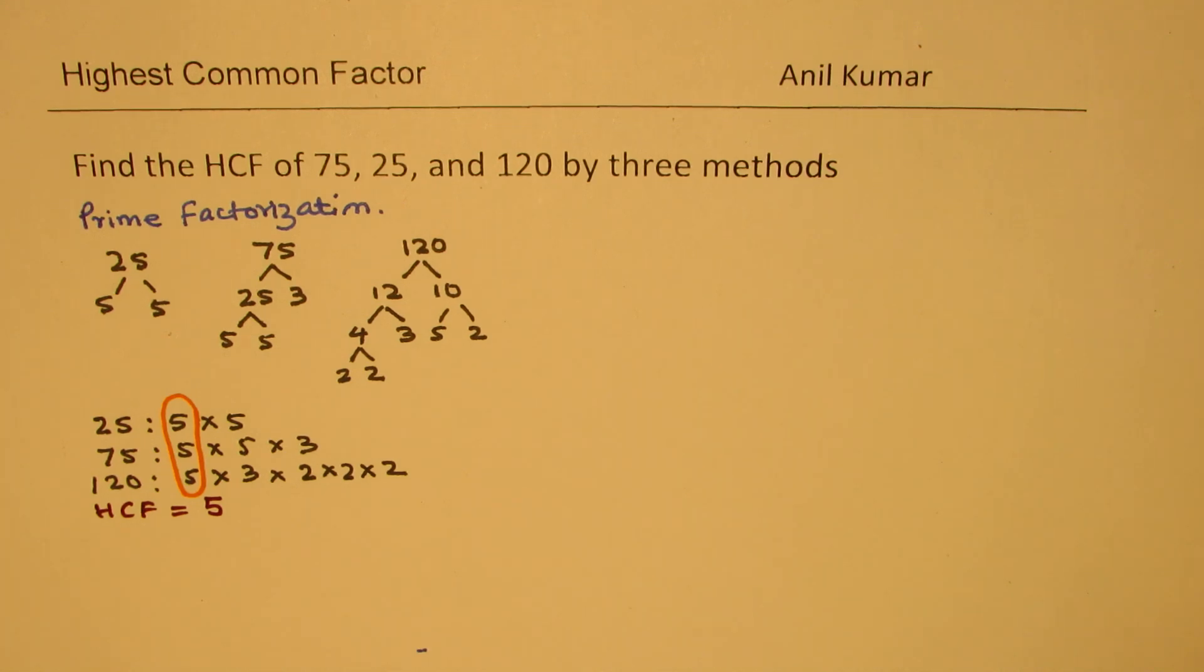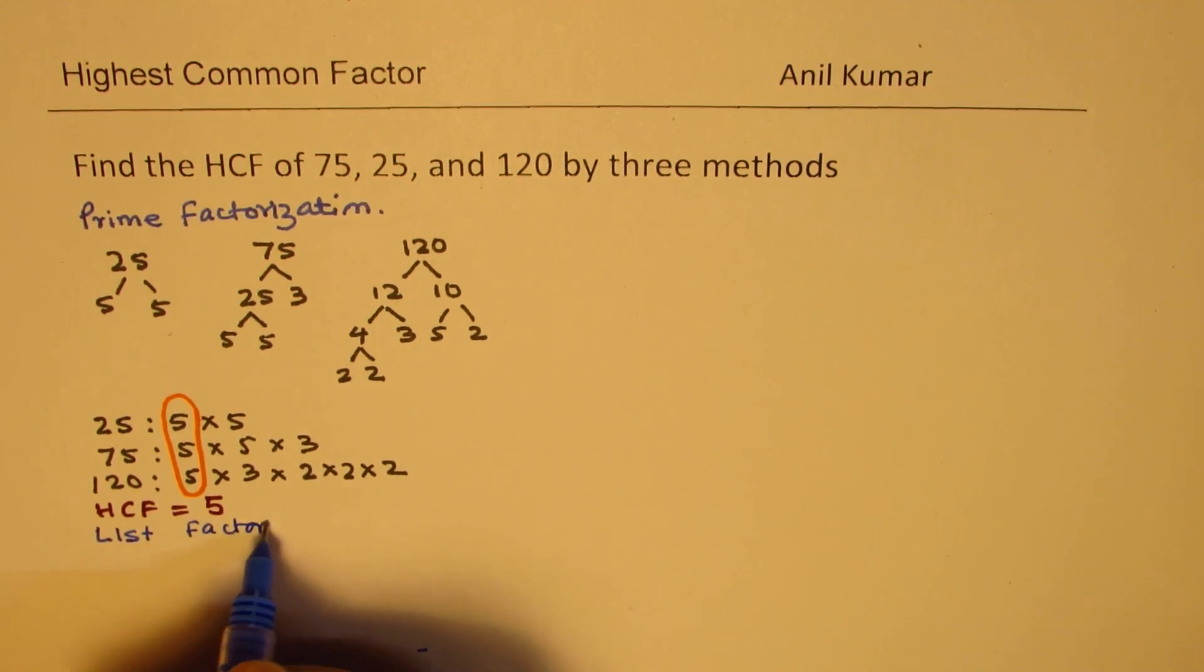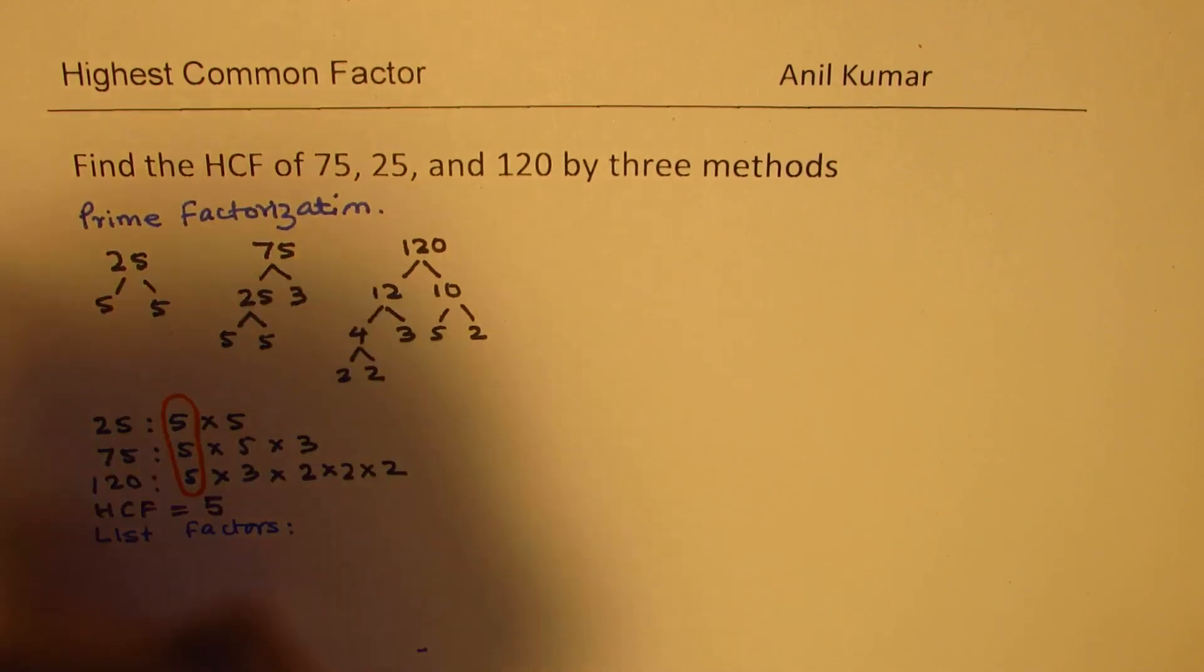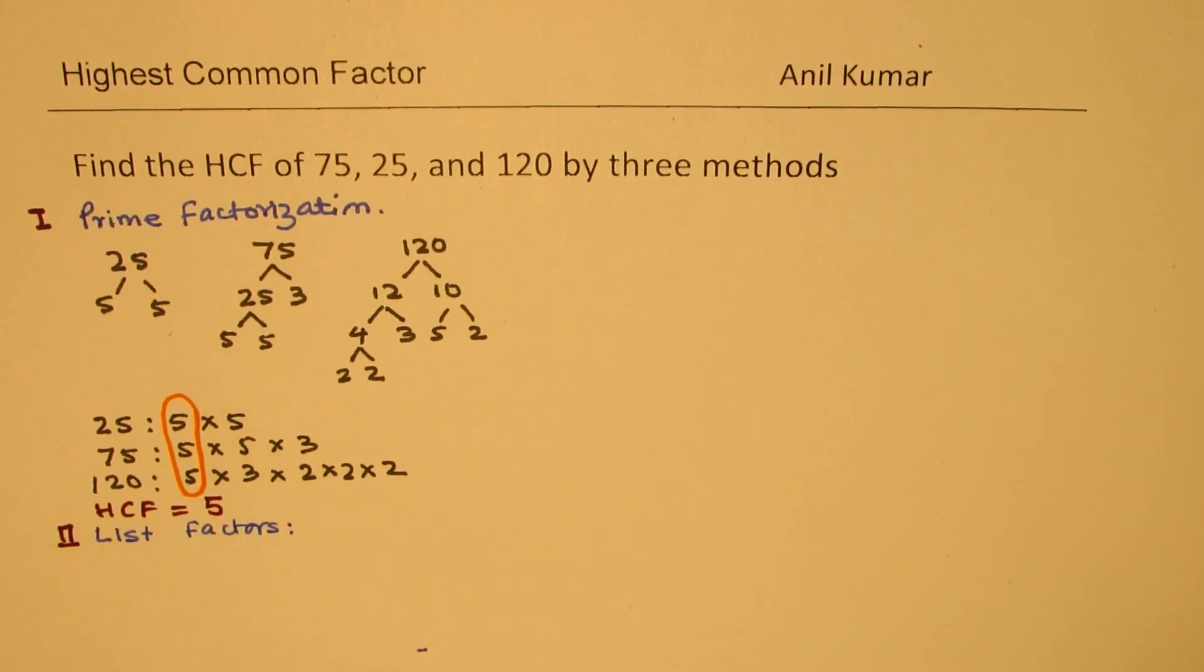Now, the second method could be that we list all the factors. So, method number 2 will be list factors. This is our first method. Third method will be long division which I'm going to take.